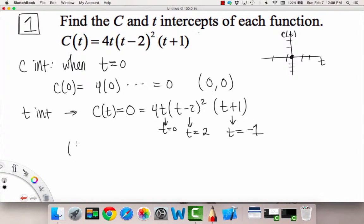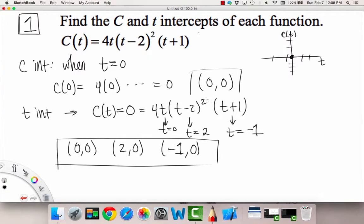If we just list those out, when t is zero, we get a c value of zero. When t equals two, we get a c value of zero. And when t equals negative one, we get a c value of zero. So we see something interesting. One of our horizontal intercepts is the same as our vertical intercept, and that's because it is the point (0, 0). So when t is equal to zero, then our function value is equal to zero, and vice versa.